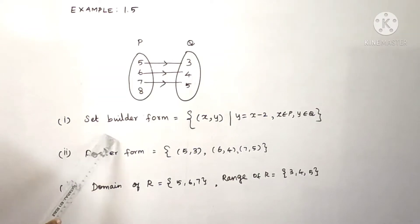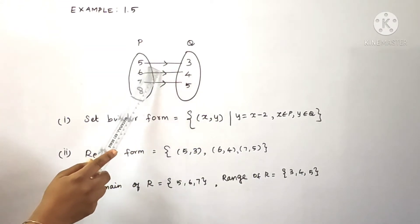Set builder form represents the set notation in the relation. How do we set this? Relation is ordered pairs. So x, y. Y is defined by x.